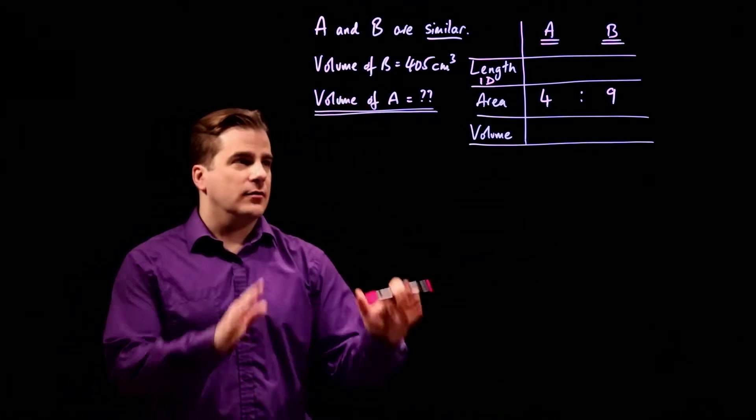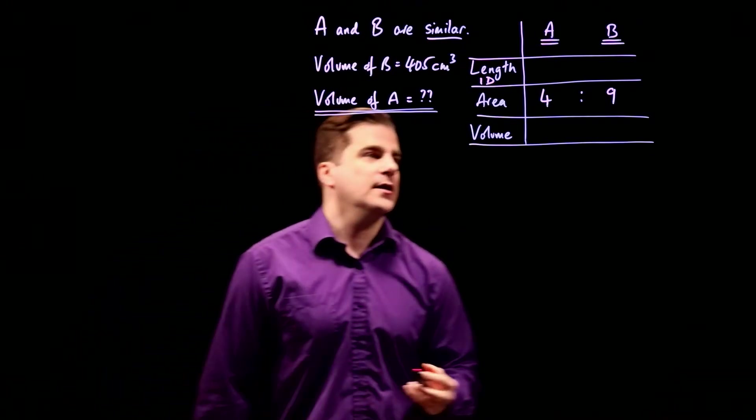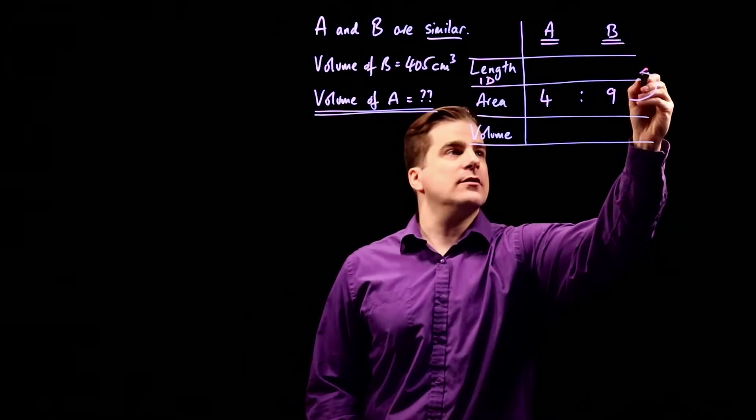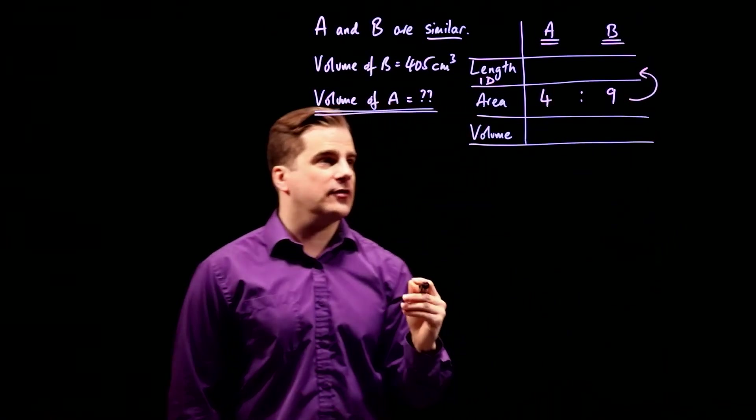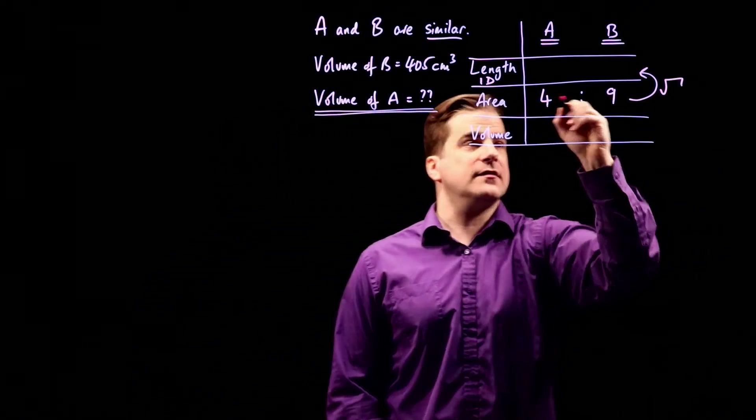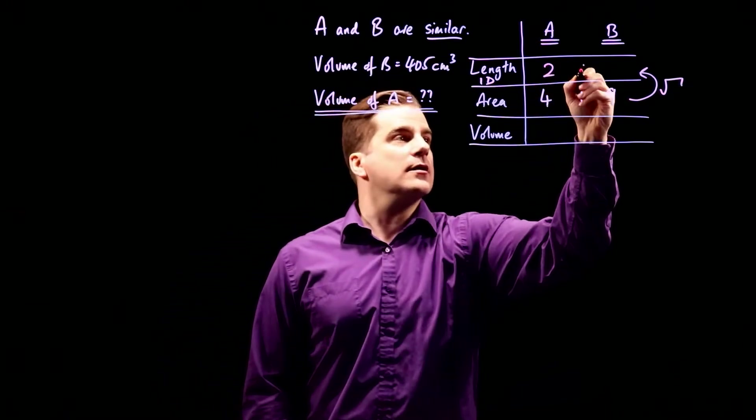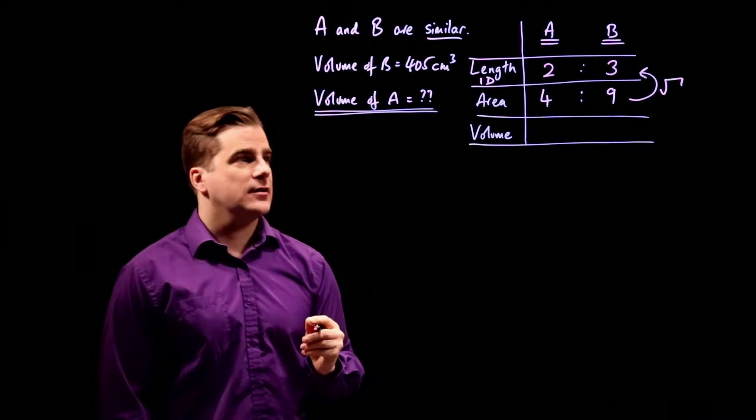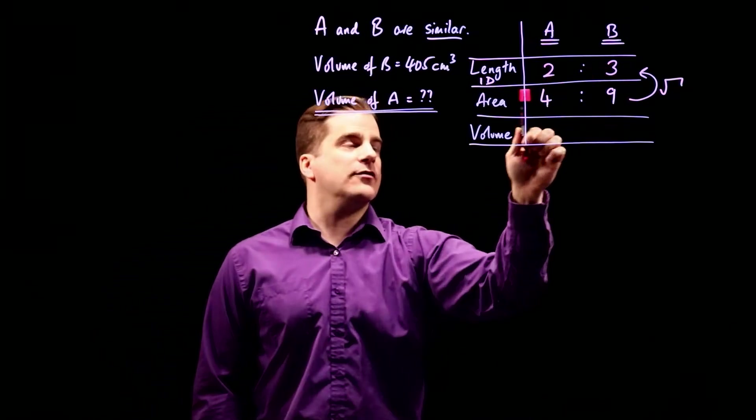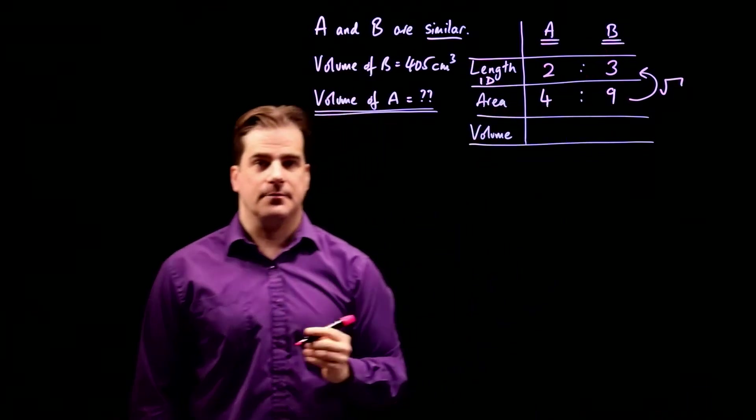Right. When you know what to do, it's quite simple, you just do it like this. To go from the area to the length ratios, you just take the square root. So we're going to square root these two, the square root of four is two, the square root of nine is three. So straight away, we know the ratio of the lengths of the sides of A and B.